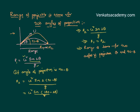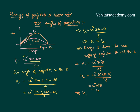The heights are obviously going to be different. In the first case, for an angle of projection theta, maximum height H1 equals u squared sine squared theta divided by 2g. For the second angle of projection 90 minus theta, maximum height H2 equals u squared sine squared(90 minus θ) divided by 2g. Since sine(90 minus θ) equals cos θ, H2 equals u squared cos squared theta divided by 2g. So only the ranges are the same, but the maximum heights are different.